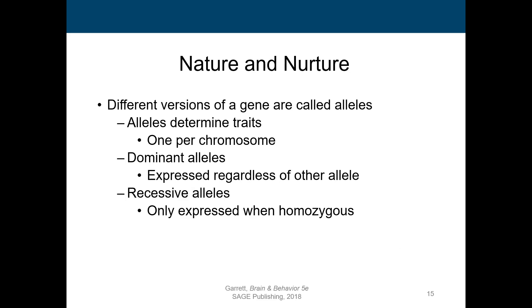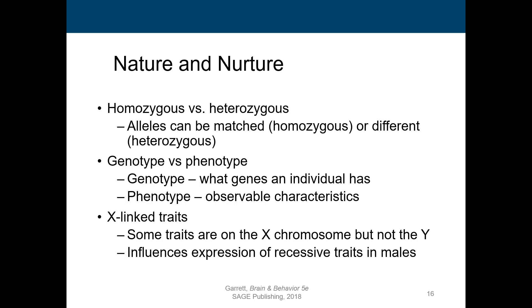Different versions of a gene are called alleles, and these alleles determine traits — there's one per chromosome. We have dominant alleles, which are expressed regardless of the other allele, and we have recessive alleles, which are only expressed when homozygous — when paired with the same recessive allele. Alleles can be matched, called homozygous, or different, called heterozygous.